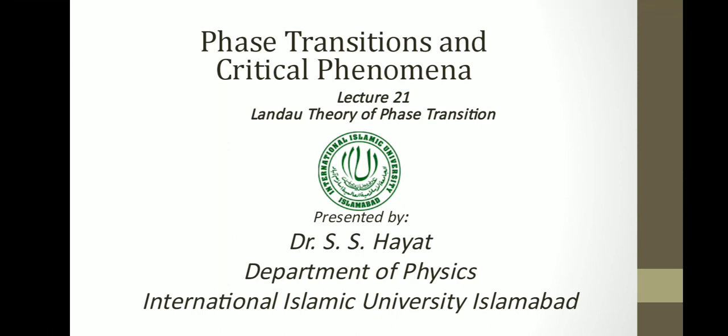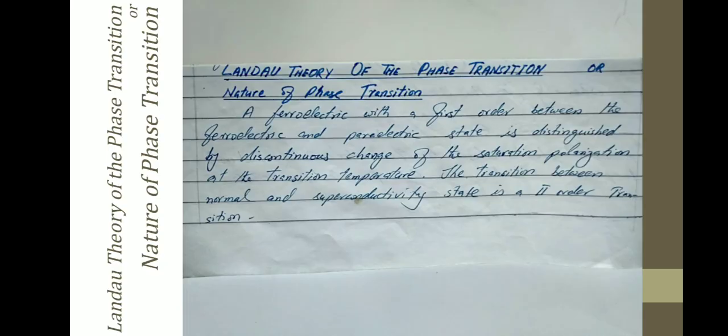Today we are going to study the Landau theory of phase transition. Phase transitions are of two types: first order transition and second order transition. When a material changes from solid to liquid and liquid to gas, there is a control parameter which is the temperature. When we change the temperature, the material changes from one phase to another phase.